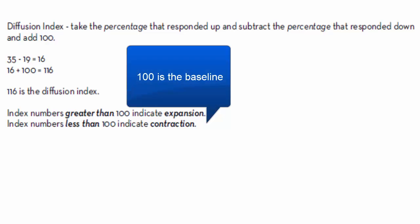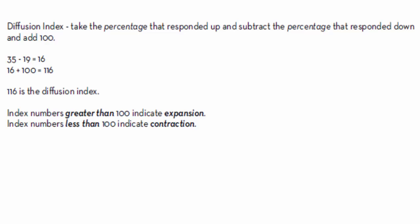So 100 is a baseline. If your answer is 100, that means no change, or the ups and downs offset each other. If your index number is greater than 100, it indicates an expansion — more people said up than down. If your index number is less than 100, that indicates a contraction, or more people said down than said up.